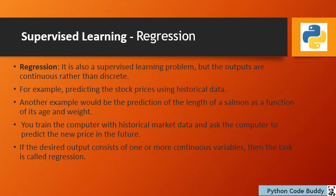Regression is a supervised learning problem where the outputs are continuous rather than discrete. For example, predicting stock prices using historical data, or predicting the length of a salmon fish as a function of its age and weight. You train the computer with historical market data and ask it to predict future prices. If the desired output consists of one or more continuous variables, the task is called regression.